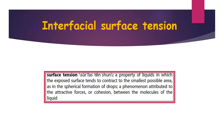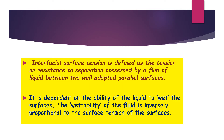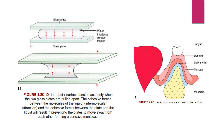Coming to interfacial surface tension, according to GPT-9 it is defined as the property of liquids in which the exposed surface tends to contract to the smallest possible area, as in the spherical formation of drops — a phenomenon attributed to the attractive forces or cohesion between the molecules of the liquid. More simply, it is the tension or resistance to separation possessed by a film of liquid between two well-adapted parallel surfaces. It is dependent on the ability of the liquid to wet the surfaces; the wettability of the fluid is inversely proportional to the surface tension of the surfaces.